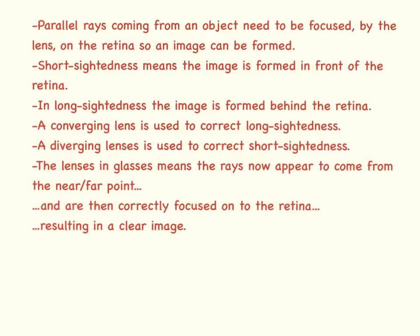Parallel rays coming from an object need to be focused by the lens of the eye onto the retina so the image can be formed. Short-sightedness means the image is formed in front of the retina, while in long-sightedness the image is formed behind the retina. A converging lens is used to correct long-sightedness, while a diverging lens is used to correct short-sightedness.